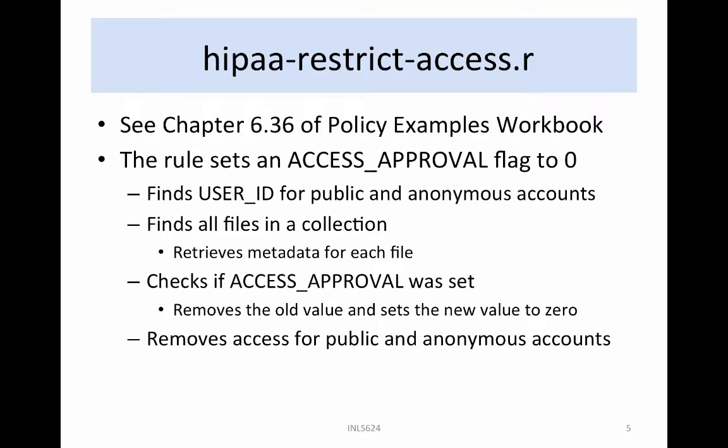The rule sets an access approval flag to zero and removes public access. The steps involved are: find the user ID for public and anonymous accounts, find all files in the input collection name, retrieve the AVU metadata for each file, check whether an AVU for access approval was set, remove the old value and set the new value to zero, and remove access for public and anonymous accounts.